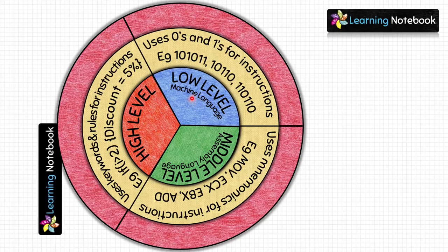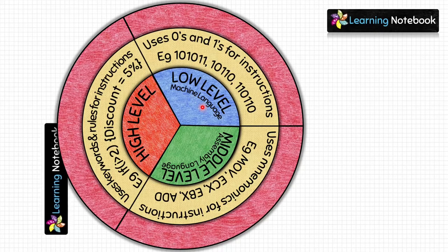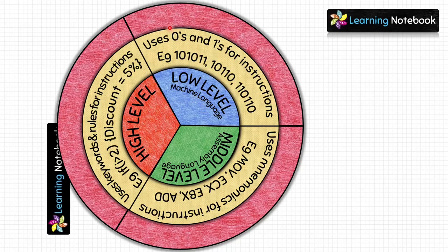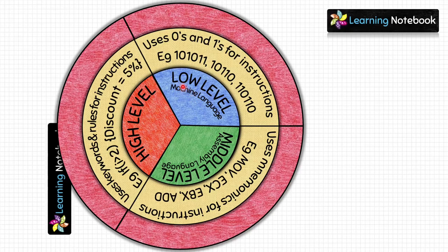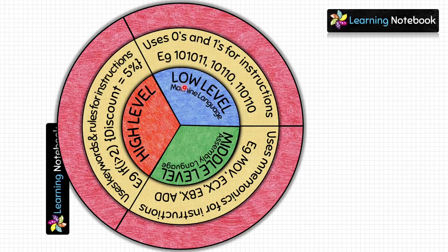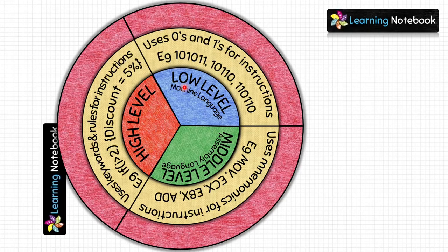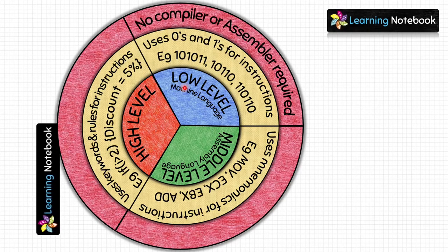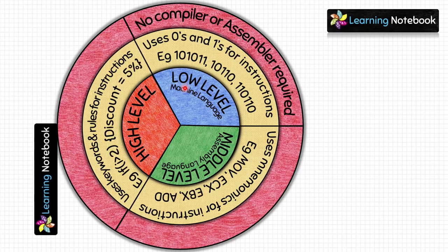Now let's write more about the three types of computer languages on the pink circle. For low level language, since instructions are given only in 0 and 1, no assembler or compiler is required.